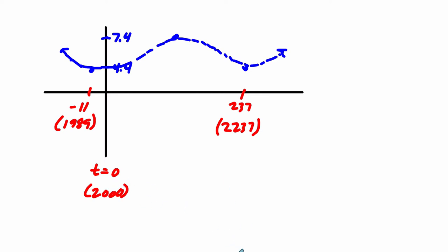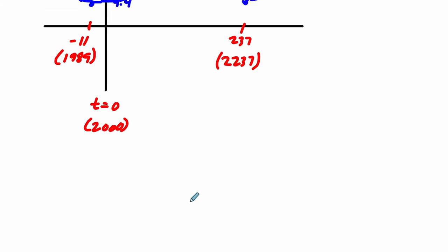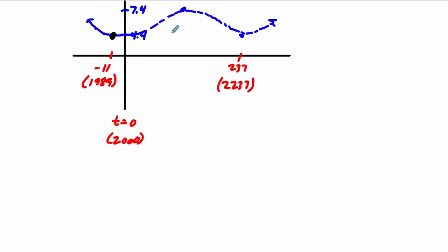First of all, I'm going to say, what is the period? Well, the period happens between any two minimum points on the graph. So that's the period is going to be 237 minus negative 11, and that gets you 248. So the cycle takes 248 years to complete a cycle here. And then I might look at my midline. That's just the average of the maxes and the min. So it's 7.4 plus 4.4, which is 11.8 divided by 2 is 5.9. That's our midline.